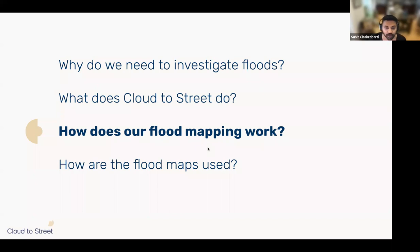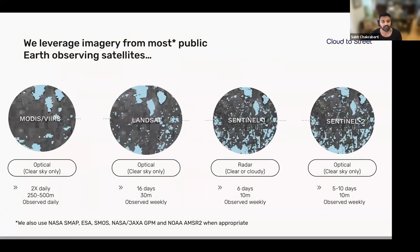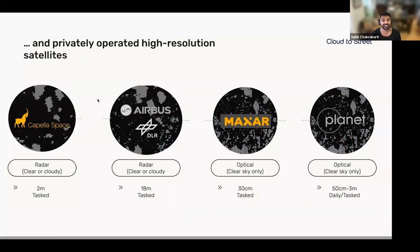For our flood mapping, we leverage imagery from most public Earth-observing satellites: MODIS, VIIRS, Landsat, Sentinel-1, and Sentinel-2. We have also used SMAP, SMOS, GPM, and AMSR-2 to understand flooding. We also use tasked satellites like PlanetScope, which require pointing the satellite at a specific location and are expensive, but very useful when high-resolution knowledge of flooding is needed — I'll show a case study of that later.